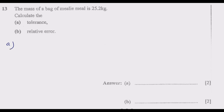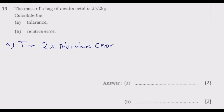When the question asks us to find the tolerance level, we use the formula: T (tolerance) = 2 multiplied by the absolute error. So the next question is: what is the absolute error? To find the absolute error, we take half of the least unit of measurement, because the absolute error tells us the rounding error whether above or below.